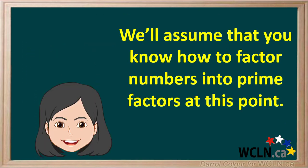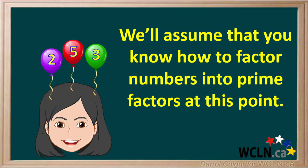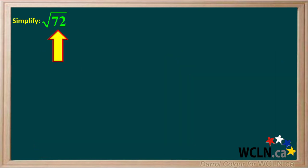We'll assume that you know how to factor numbers into prime factors at this point. If not, you may need to review it from a previous math course. In this example, we're asked to simplify the square root of 72.